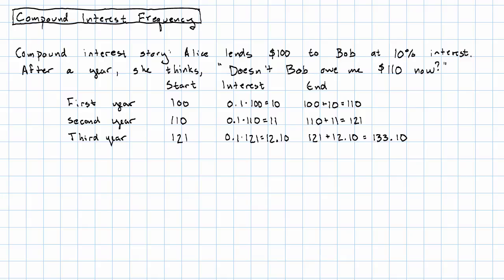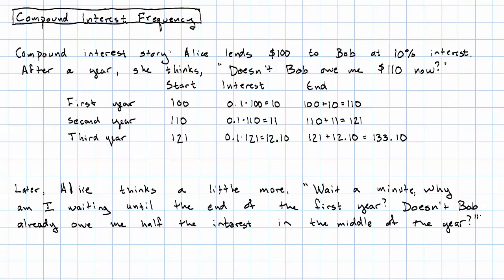After a while, Alice starts to get pretty good at this compound interest thing, and she starts to think a little bit more. She thinks, wait a minute, why am I waiting until the end of the first year? Doesn't Bob already owe me half of the interest in the middle of the year?